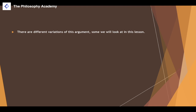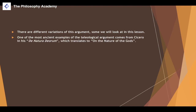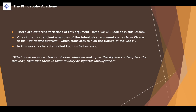There are different variations of this argument, some of which we'll look at in this lesson. One of the most ancient examples of the teleological argument comes from Cicero in his work On the Nature of the Gods, where a character called Lucius Balbus essentially sums up the argument in its most skeletal form: look at the world, look at the heavens, look at the sky, look at nature, and you have to infer that there must be some kind of divinity — some superior intelligence that designed and made this the way it is.